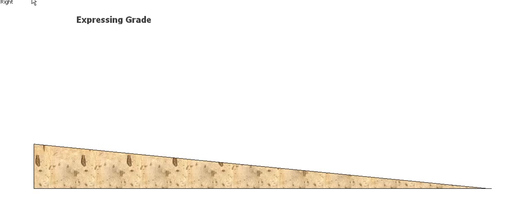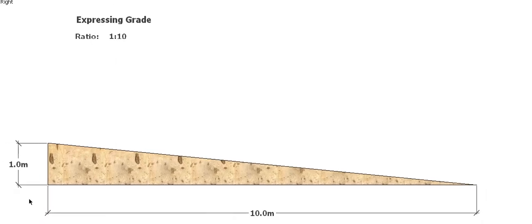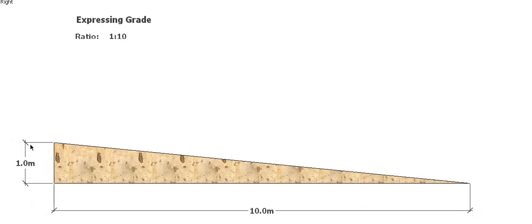The first one's as a ratio. So in this case, we've got a ratio of one is to ten. So basically that means, in this case I'm going to work in meters, for every ten meters that the ground runs, then it actually rises one meter.